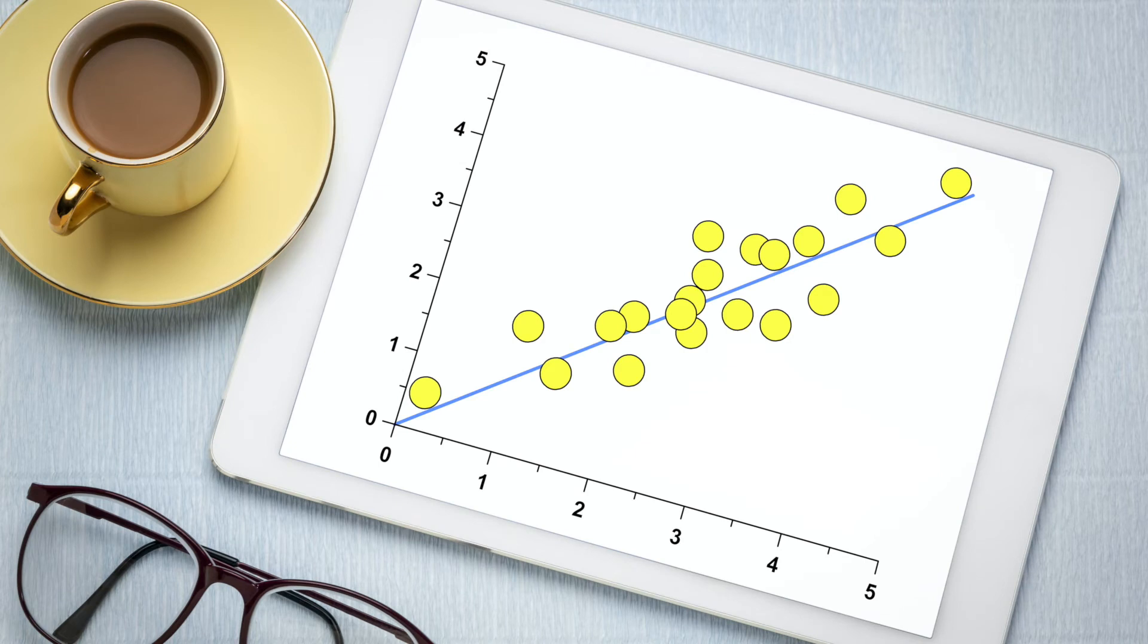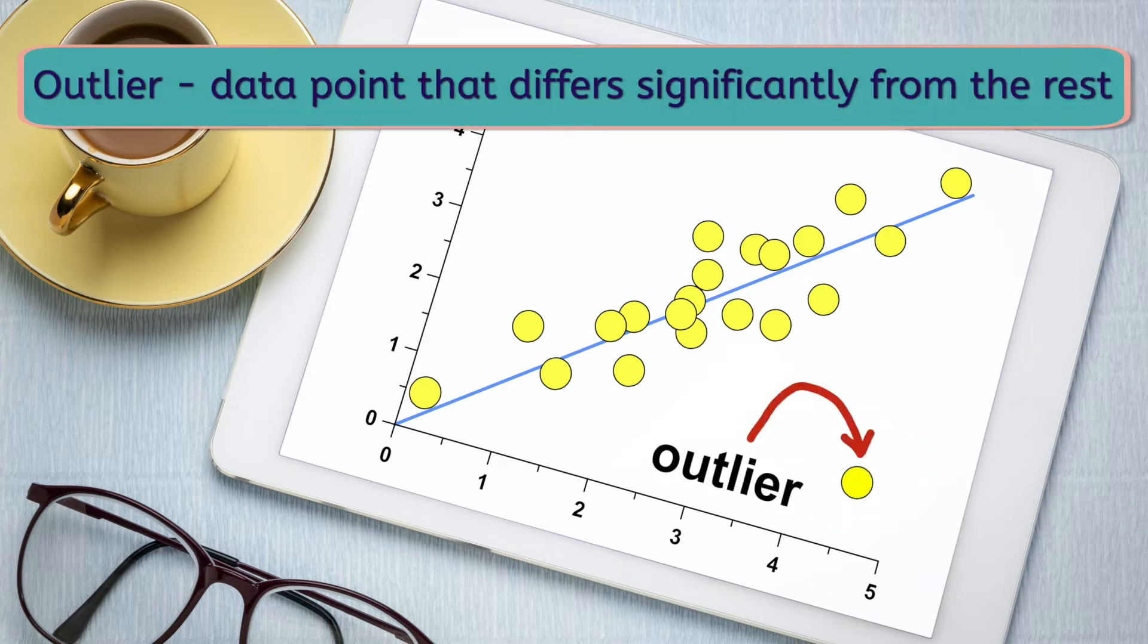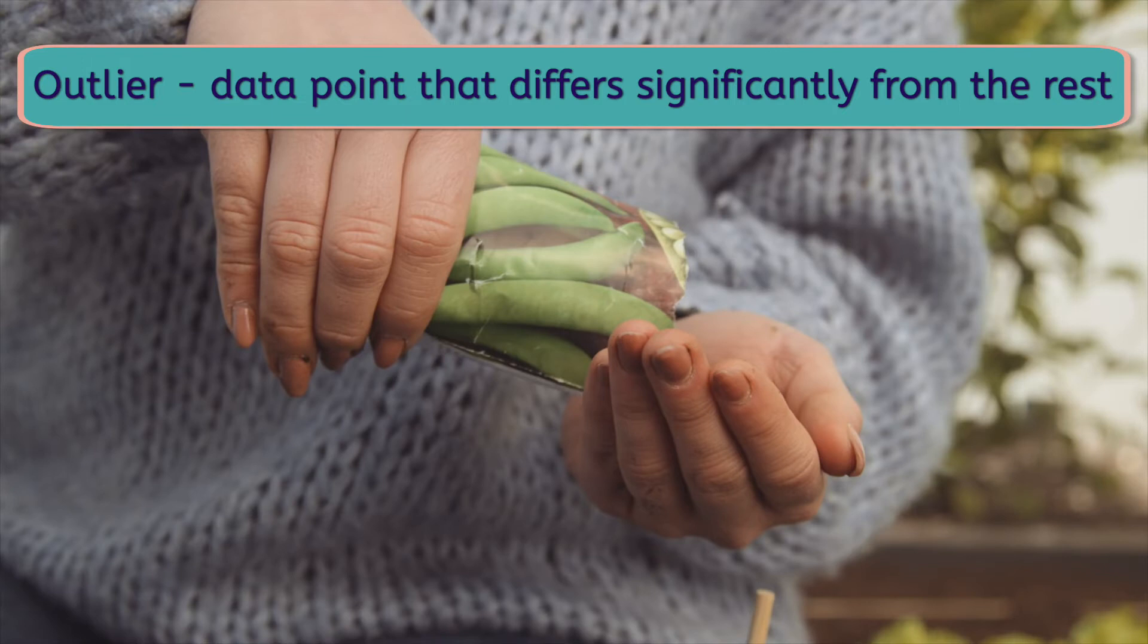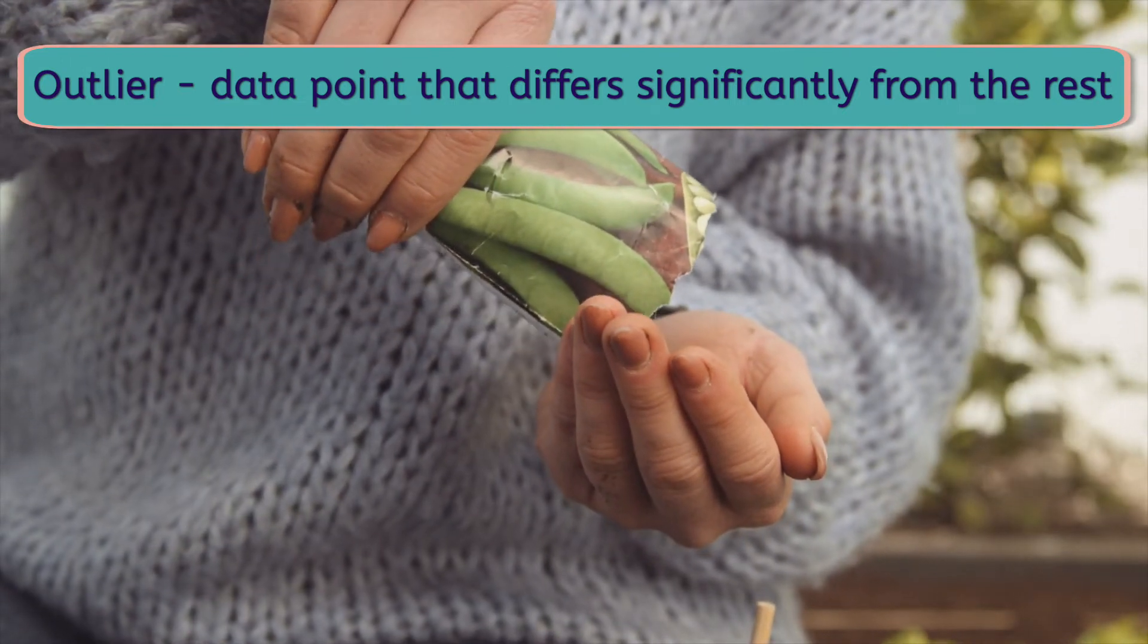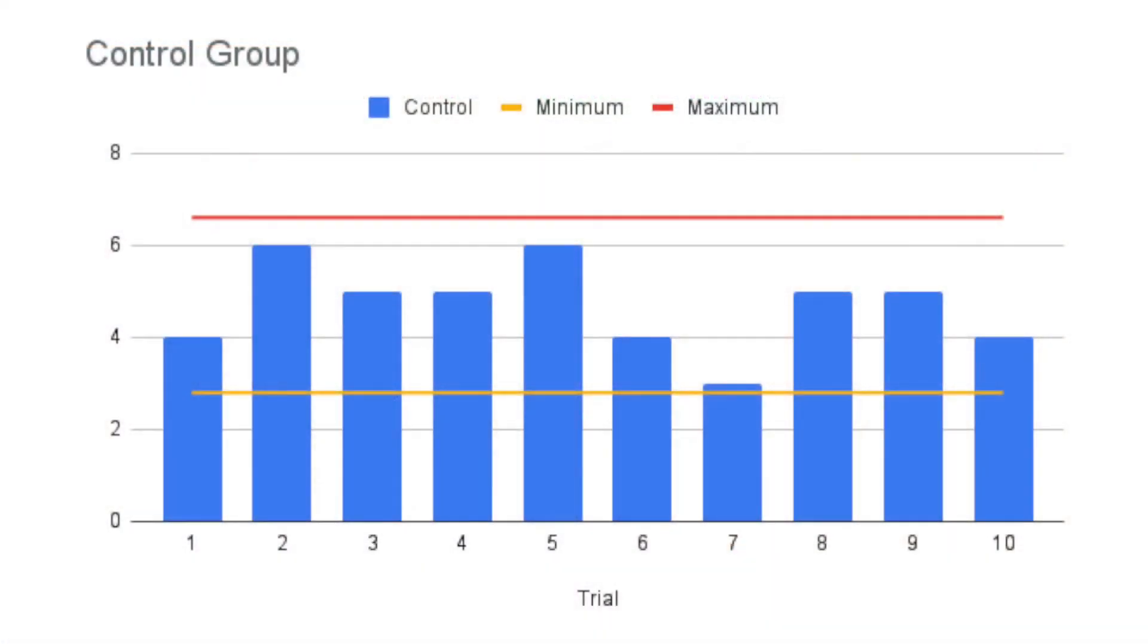One way to investigate this is to create a graph of our data points to make sure that there are no outliers. An outlier is a data point that differs significantly from the rest. Sometimes there is a good reason. Maybe there was something wrong with the seed before it even started growing. On this graph of our data, each blue bar represents one individual trial from the control group, and the red and yellow bars indicate the range that our data values should have fallen into, assuming they were not outliers. It looks like all of our data values are safe. None go above our maximum bar, or below our minimum bar.